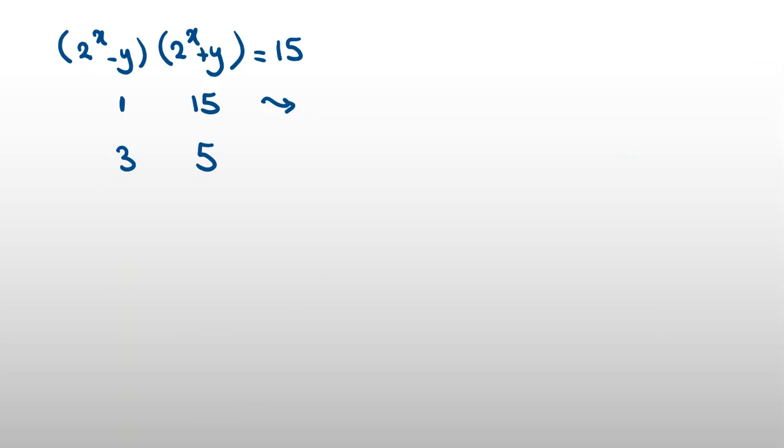So from here, if we rewrite 2^x - y = 1 and 2^x + y = 15, if we add these equations, 2^x + 2^x = 15 + 1 = 16. So the left-hand side is 2·2^x = 16, which is 2^4. So x + 1 = 4, therefore x = 3.